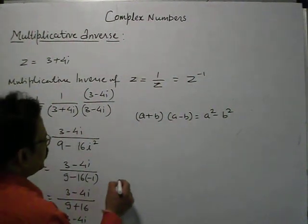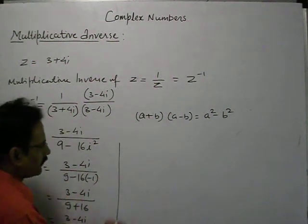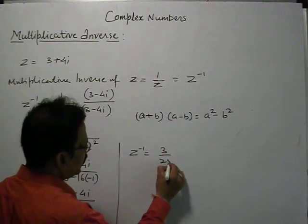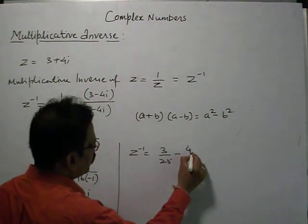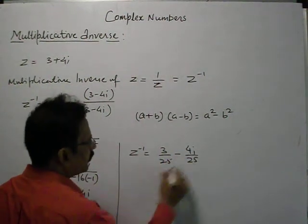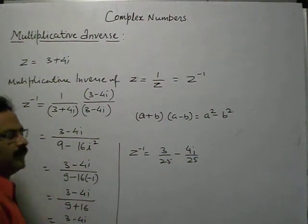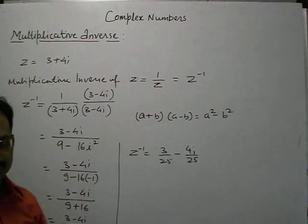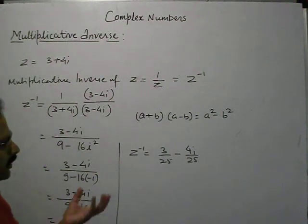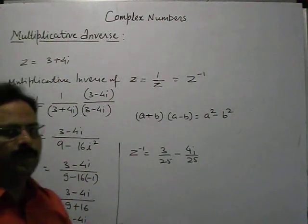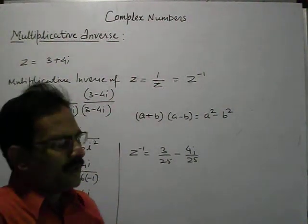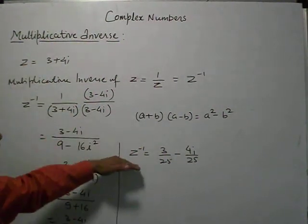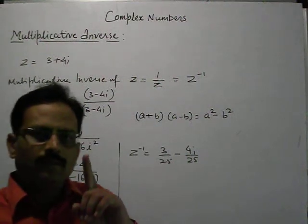So it is 3 minus 4i upon 25. Or we can represent it as: z inverse is equal to 3 upon 25 minus 4i upon 25. This is the multiplicative inverse of 3 plus 4i. In this way we can easily find out the multiplicative inverse of a complex number. Now let us check — if we multiply z and z inverse, we should get 1.